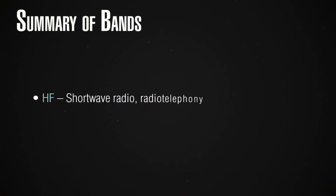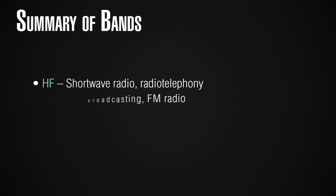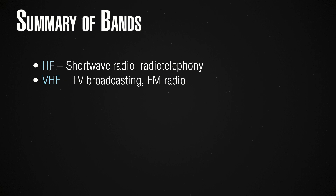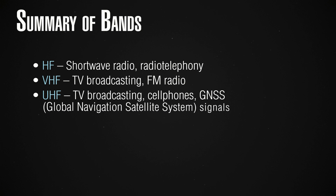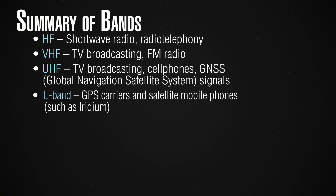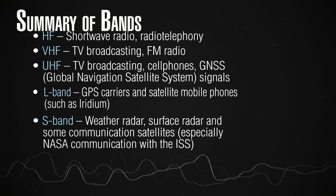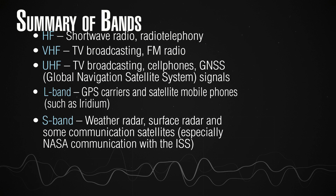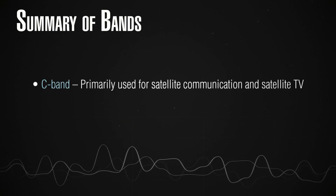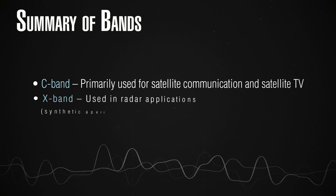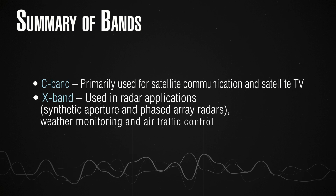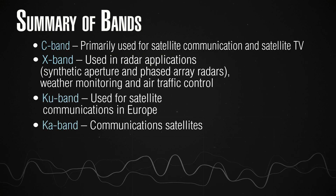Only the bands roughly between 3 and 30 GHz are used for satellite communication in practice. The bands are distributed as follows: High frequency bands are used for shortwave radio and radio telephony. Very high frequency bands are used for TV broadcasting, FM radio, etc. UHF bands are for TV broadcasting, cell phones, and GNSS signals. The L band is used for GPS carriers and satellite mobile phones such as Iridium. The S band is used for radar, surface radar, and some communication satellites, especially NASA communication with the ISS. The C band is primarily used for satellite communication and satellite TV. The X band is used in radar applications, weather monitoring, and air traffic control.